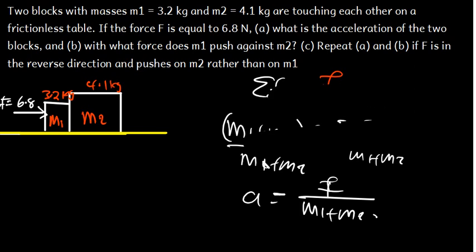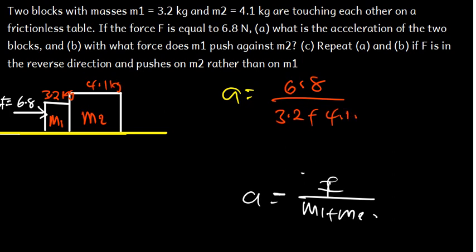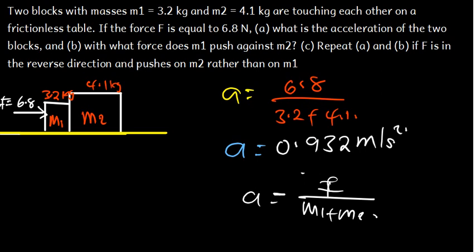Our acceleration, plugging in the values, is going to be 6.8 divided by (3.2 + 4.1), giving us 0.9315, which we can say is approximately 0.93 meters per second squared. That is the acceleration for both block 1 and block 2.